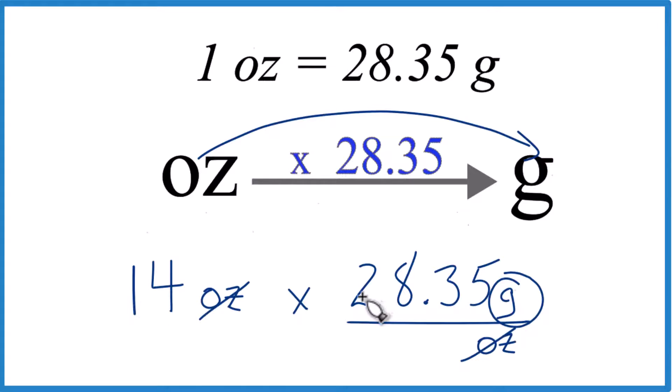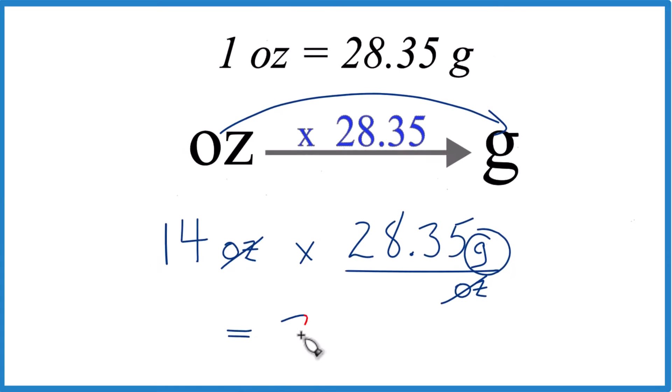So we're just multiplying 14 times 28.35 grams, and we end up with 396.9 grams. That's how you do it. That's how you convert 14 ounces to grams.